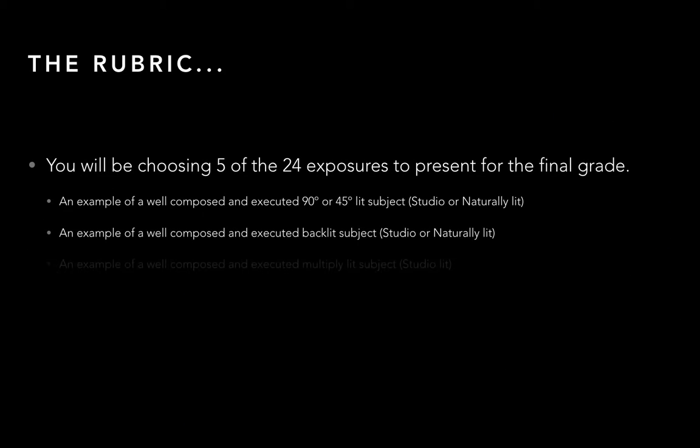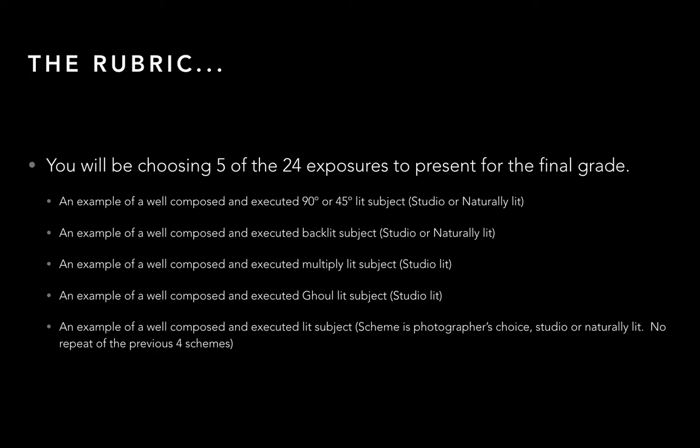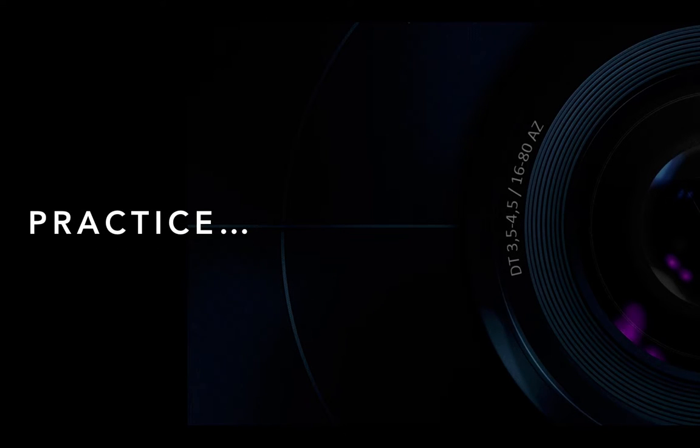What I'm looking for: the 45 or 90 degree studio or naturally lit image, the backlit subject, the ghoul-lit subject, and one more that's not any of those first four. If you do 90 degree for the first one, you could do 45 for the free choice. The 90 and 45 and backlit can be studio or naturally lit. The ghoul light and multiple light must be studio lit — there's no way to do ghoul lighting with a natural light source. You'll see the full rubric next week when your negatives are due.